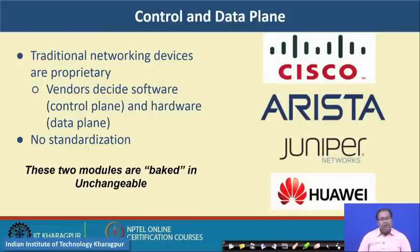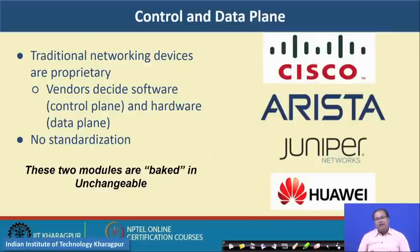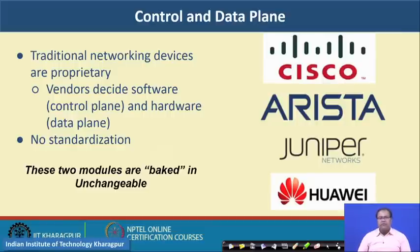Traditional networking devices are proprietary — vendors decide both the software and the hardware, both the control plane and the data plane, with no standardization between them, as every vendor applies their own optimization. Because of that, it is very difficult to purchase hardware from Cisco and then load a different operating system on that router. Although certain routers can support open source network IOS or router OS, they have their own restrictions in terms of performance and manageability. For commercial routers, hardware and software both come from the same vendor, making interoperability among products from different vendors difficult to manage in a large network.